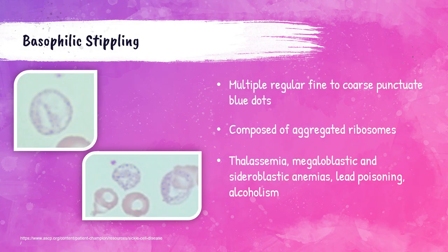Basophilic stippling is the first red blood cell inclusion we're going to learn about. These are many tiny inclusions evenly dispersed throughout the red blood cell — actually aggregated ribosome RNA remnants that stain a dark blue with the Wright stain. These inclusions can be seen in megaloblastic and sideroblastic anemias, thalassemias, alcoholism, and when the patient has been exposed to toxic levels of lead.